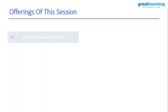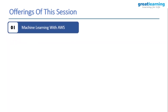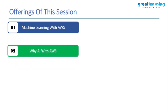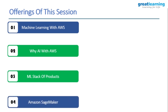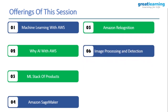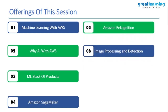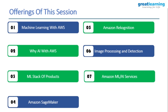This session will start by understanding what machine learning is and how to use it with AWS. We'll understand why we need artificial intelligence with AWS and how it helps in the long run. We will discuss some of the ML stack of products AWS offers, Amazon SageMaker, Amazon Rekognition, image and object detection, and AI services like Amazon Polly and Textract.